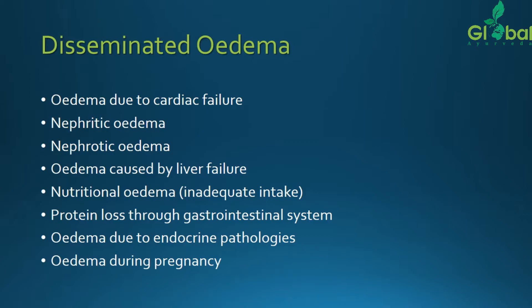Edema due to endocrine pathologies — with respect to the RAS mechanism, the renin-angiotensin-aldosterone system should also be considered. Whenever pressure variants — hydrostatic pressure imbalance and oncotic pressure imbalance — occur, the kidney or renal system maintains fluid balance. If the endocrine gland is not acting properly or any hormonal imbalance is present, as a result of other systemic disorders, this will cause disseminated edema.